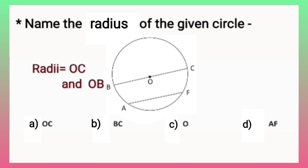So we will start from option A. Is it OC? Yes, because we have found the radius OC. So this is the correct one.